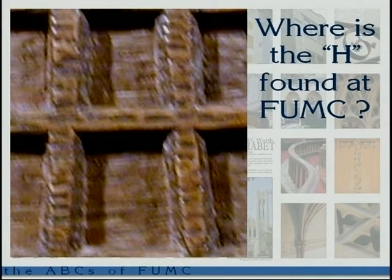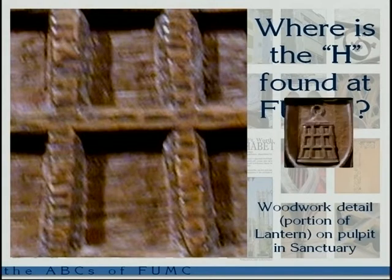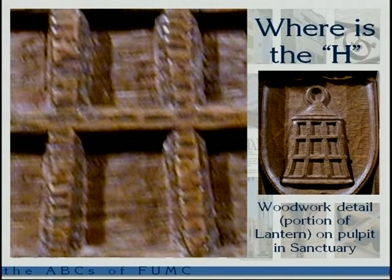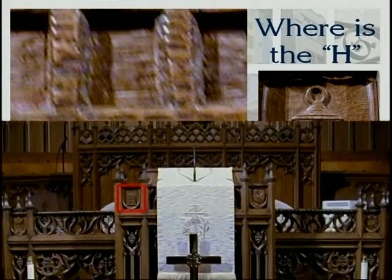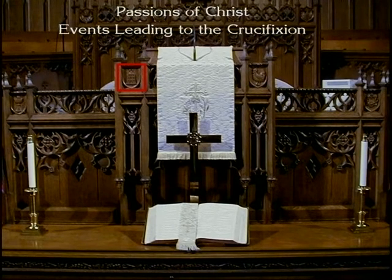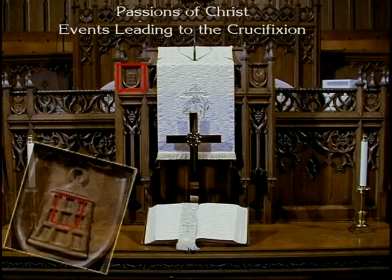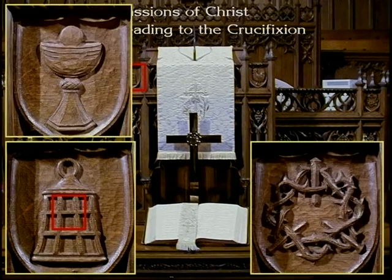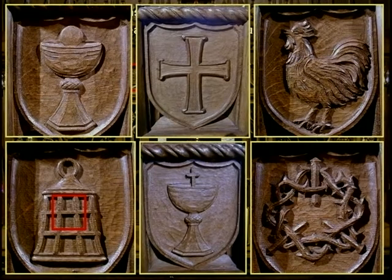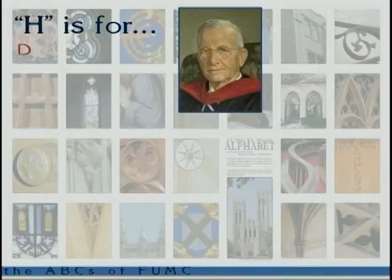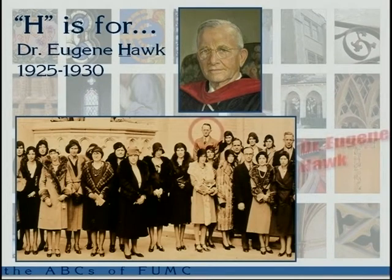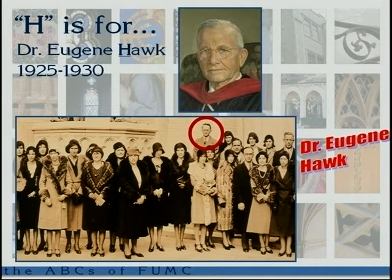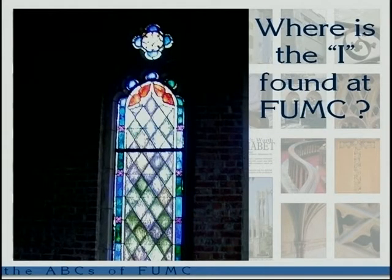Where's the H found? It's the woodwork on the pulpit — there's a lantern carved into it. Why is the lantern carved into the pulpit? The pulpit and two side areas, called prayer desks, depict the six events leading up to the crucifixion — the Passions of the Christ. The lantern represents the Romans coming to the Garden of Gethsemane with their lantern to arrest Jesus. We also have representations of the Last Supper, the denial of Peter, the crucifixion, and the empty cross. H is for Dr. Eugene Hawk, who was pastor here from 1925 to 1930.